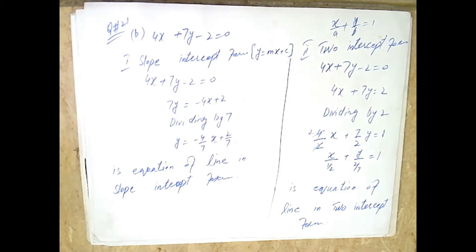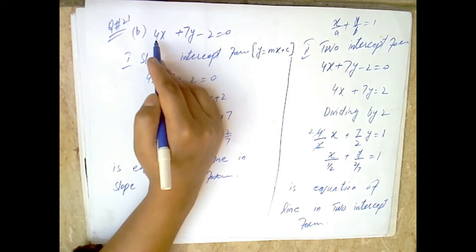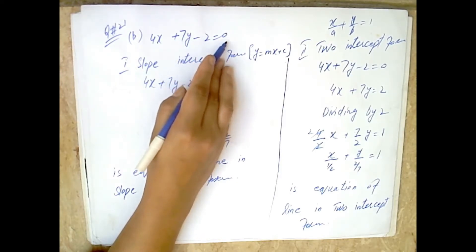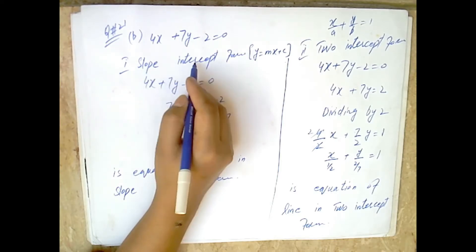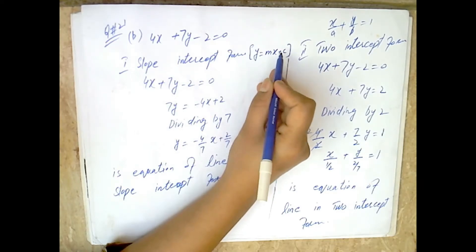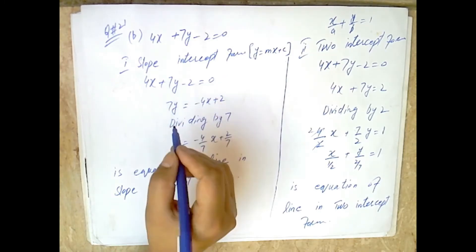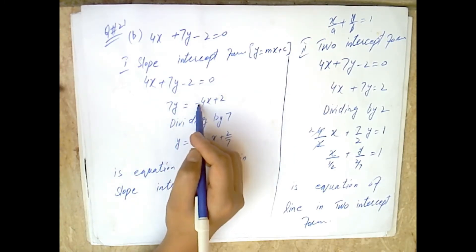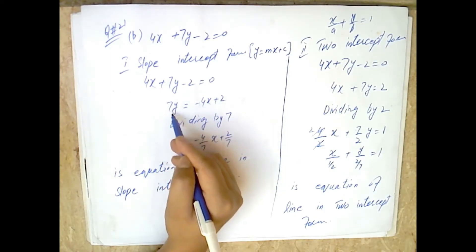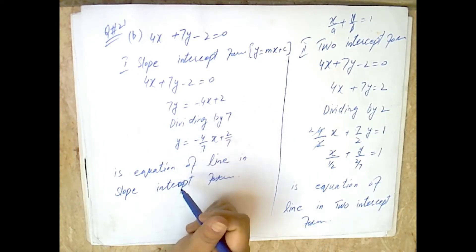Now for part (b), the second equation is 4x + 7y minus 2 = 0. First, we find the slope-intercept form y = mx + c. Keeping y on one side: 7y = minus 4x + 2. Dividing both sides by 7 gives y = (minus 4/7)x + 2/7. This is the slope-intercept form of the line.